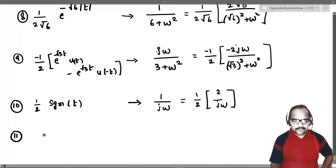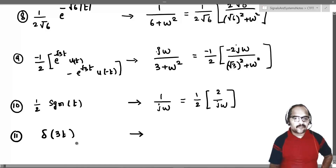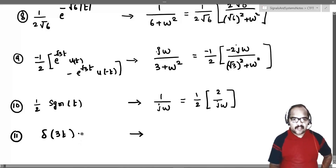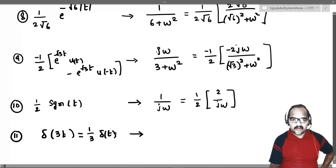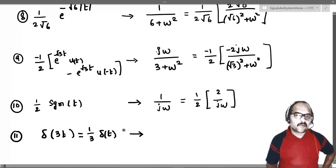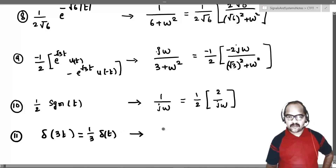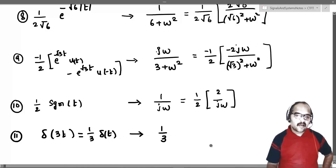Eleventh example: what is the Fourier transform of delta of 3t? We already know that delta of 3t can be written as 1 by 3 delta of t, and the Fourier transform of delta of t is 1. So the answer is 1 by 3.